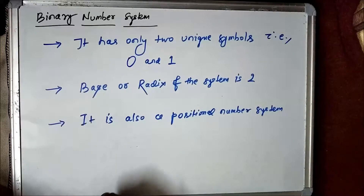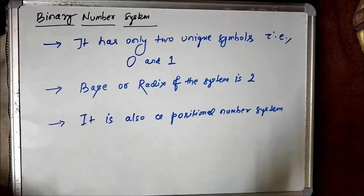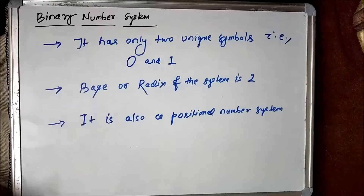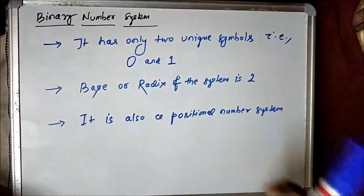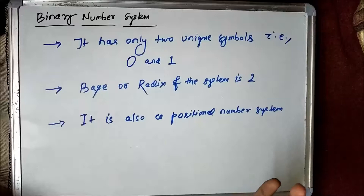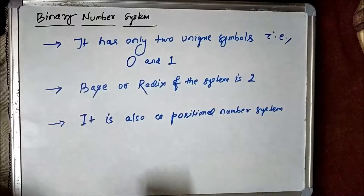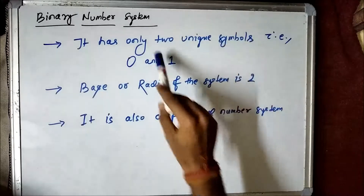The next number system we are going to discuss is the binary number system. It is also a number system, so it will consist of a set of unique symbols. But here only two unique symbols are present — 0 and 1. Using those two symbols only, we have to form numbers. The base or radix of the binary number system is 2, as only two unique symbols are present.